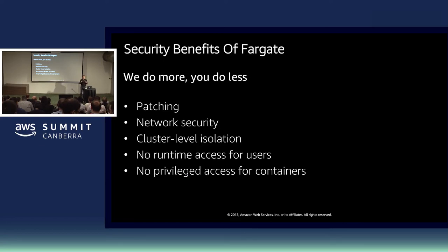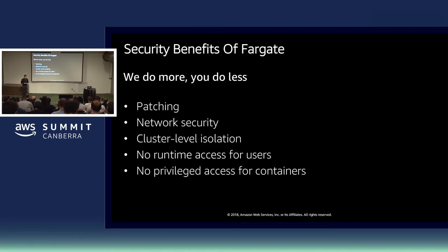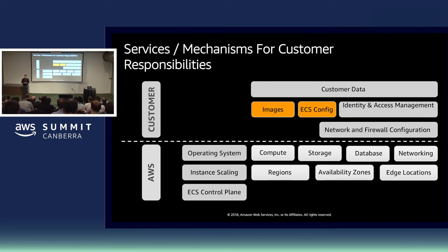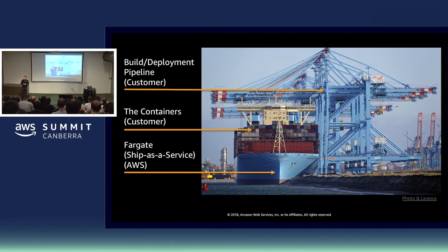Two security enhancements with Fargate: there is no runtime access to the server, container instance, or Docker container itself. However, you don't lose any troubleshooting capability because you can stream your logs to CloudWatch Logs or your favorite logging tool. The privileged flag for containers won't be enabled, which enhances security as well. With Fargate you need to secure your image and ECS configuration, and AWS takes care of the operating system. As an analogy with a real-world shipping container, Fargate is shipping as a service — we take care of the bottom layer while you need to secure the container image, your pipeline, and your development pipeline.